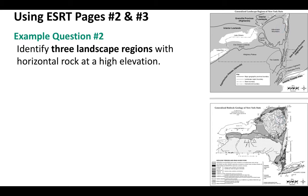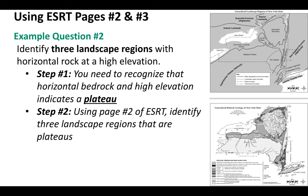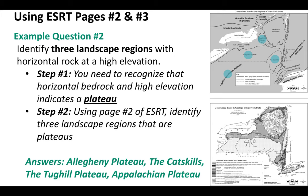Here's another example that doesn't require both pages. The question: name three landscape regions that have horizontal rock at high elevation. The key is recognizing that horizontal rock at high elevation describes a plateau. So any three plateau examples will work — using page two of the reference table, possible answers include the Allegheny Plateau, the Catskills, the Tug Hill Plateau, and the Appalachian Plateau, since all of these have horizontal rock at high elevation.